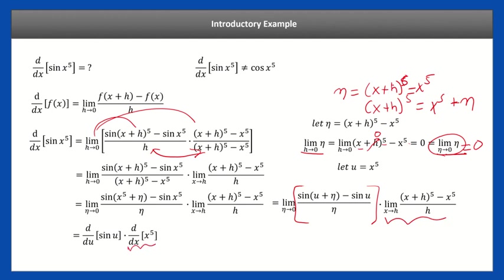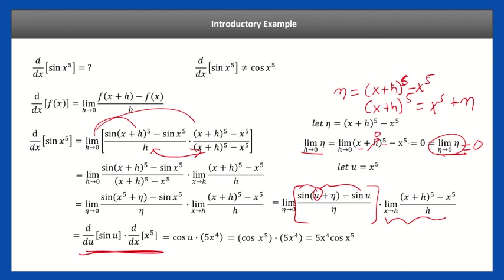Notice this is also a derivative — it's a difference quotient: sine of u plus eta minus sine of u over eta, where eta is sort of like our new h. So it's a derivative, but with respect to u. Now we have a working formula. The derivative of sine is cosine, and the derivative of x to the fifth is 5x to the fourth using the power rule. We can replace u with x to the fifth — since we said u is x to the fifth — and now everything is in terms of x.